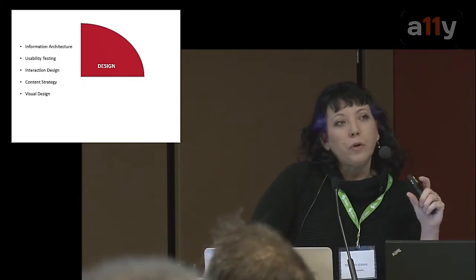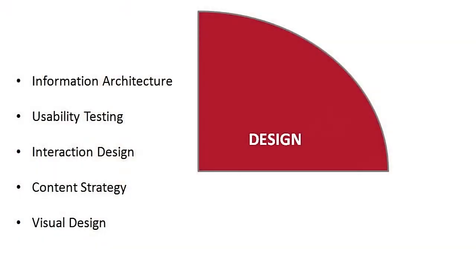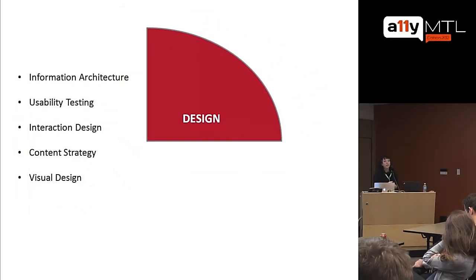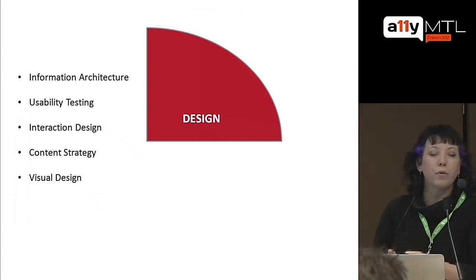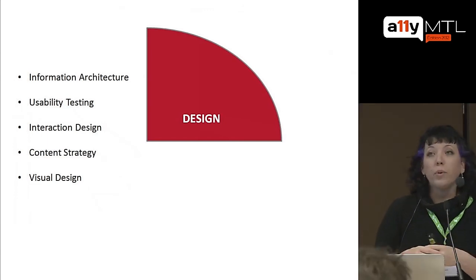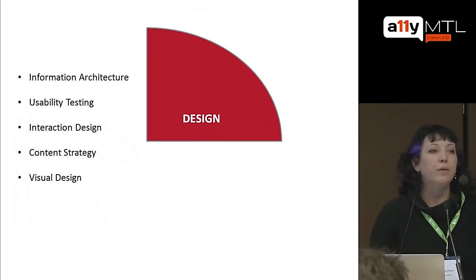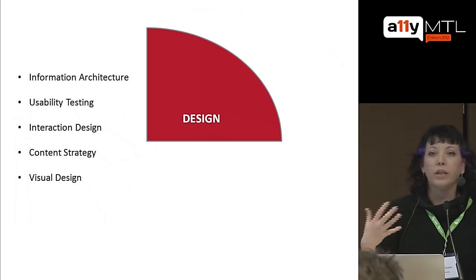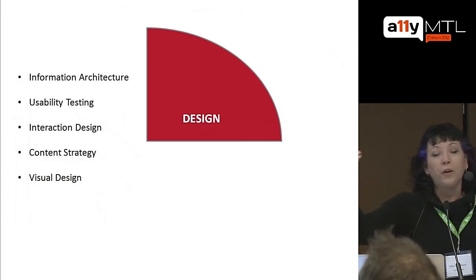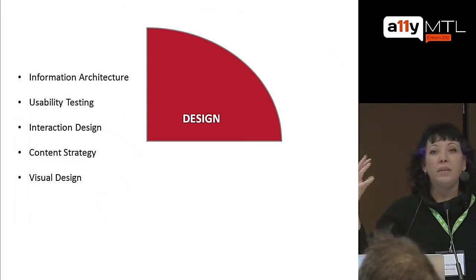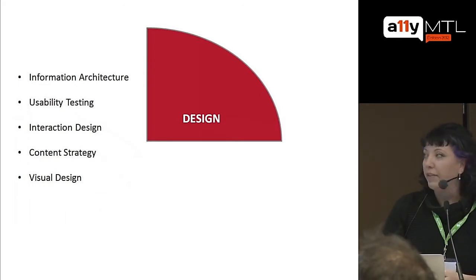You have to integrate accessibility into each step of the design process. When you're discussing information architecture and thinking about navigation structure, imagining people's mental models, and doing card sorting exercises, you need to pull accessibility in as not just a stakeholder, but a driver for those decisions. Because of that, you won't be as likely to end up with 18 layers of navigation that don't communicate with one another and become unsustainable.